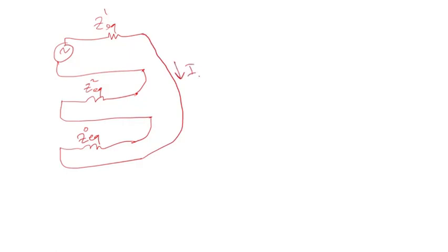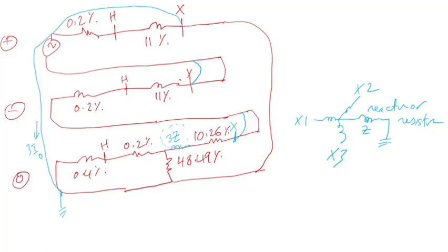What will flow here is I0, which equals I1, which equals I2 — zero sequence, positive sequence, and negative sequence currents. These flow through the equivalent zero sequence impedance, then through the equivalent negative sequence impedance, and back to the source through the positive sequence equivalent impedance. The positive sequence equivalent impedance is the high-side system impedance plus the transformer impedance, which is the same as the negative sequence impedance. For the zero sequence impedance, it's one impedance plus another in parallel with a third, all in series with another impedance.